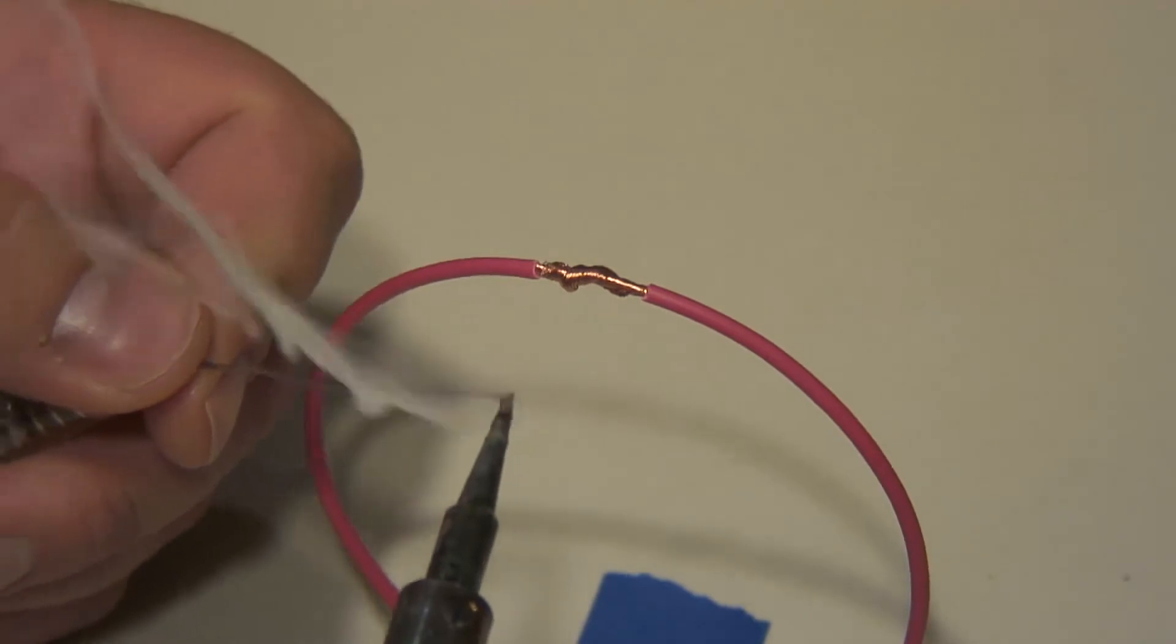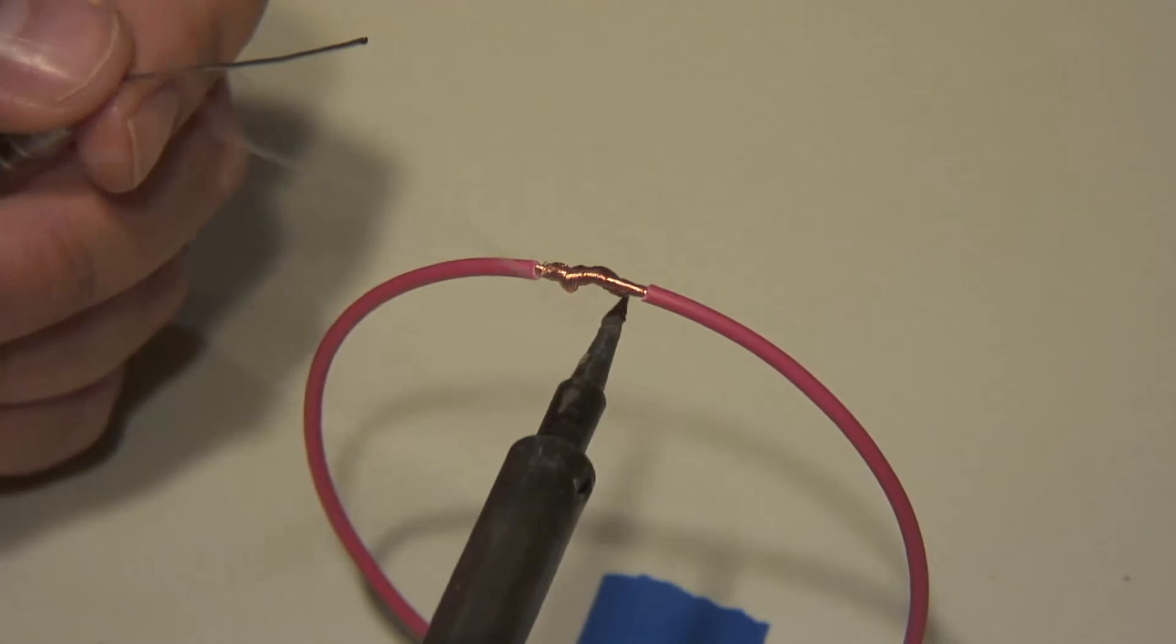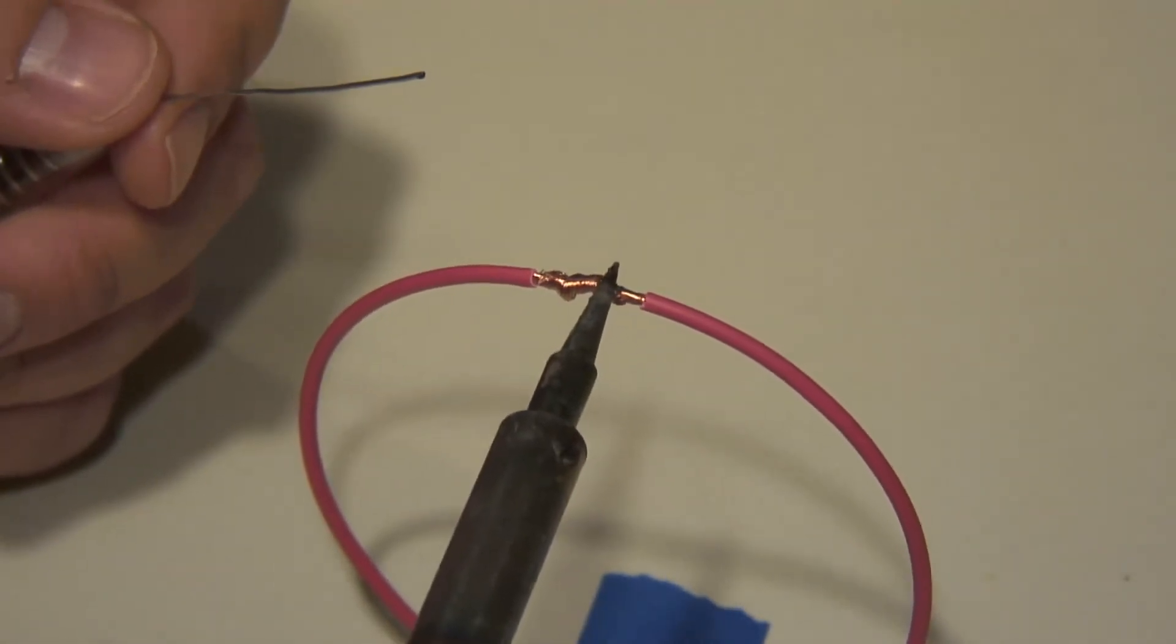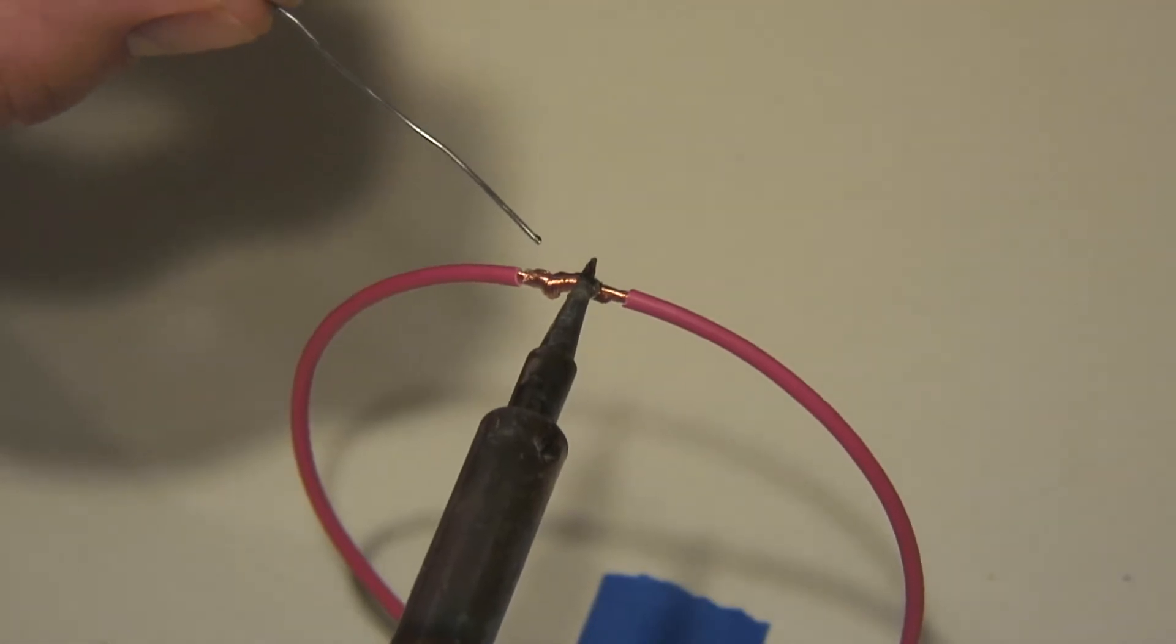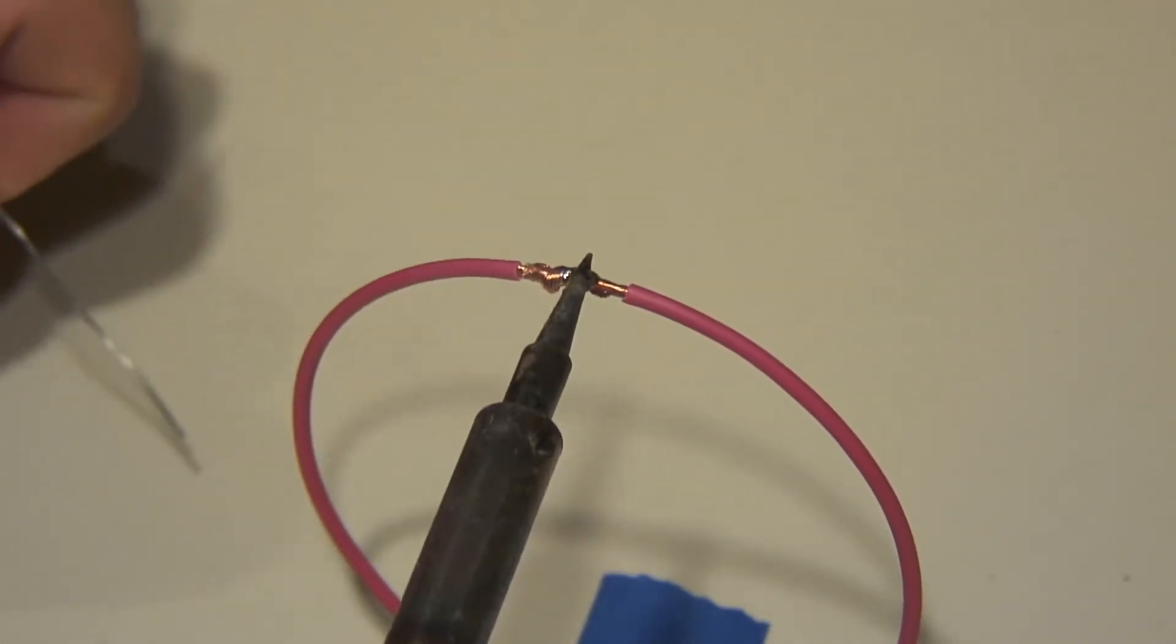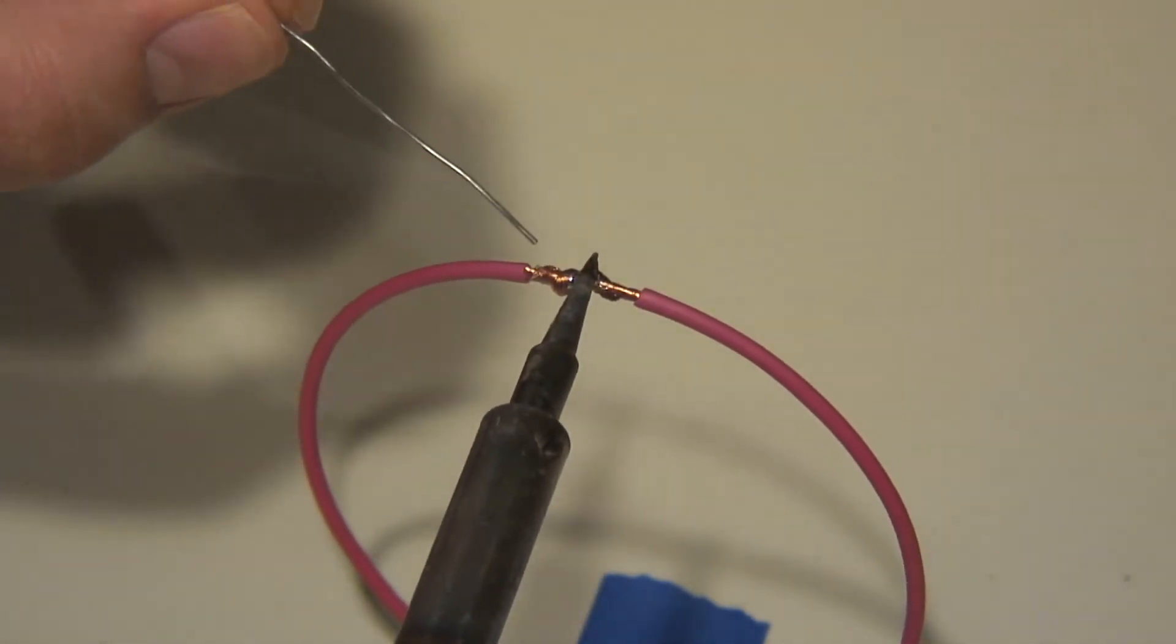So get quite a bit of solder on the end of your iron, and the reason for that is that we need that solder as a conduit to transfer heat onto our copper because we need to get the wire hot. So now that it's on there and I'm holding it a bit, I'll just add a little bit of solder right there between the edge of the iron and the copper, and it'll melt on and it'll help transfer that heat.